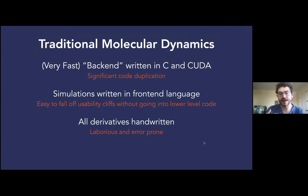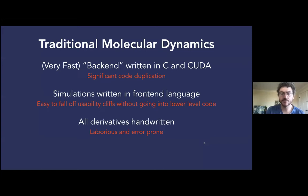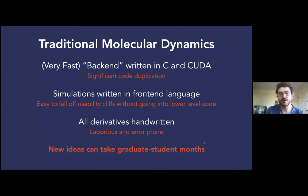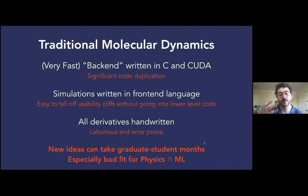One of the ways you get really fast code is by handing off large chunks of the simulation to the C library, so you're not going back and forth to Python — you say 'run my simulation for a thousand or ten thousand steps' and get back a state when done. Finally, all the derivatives are handwritten, which I think is laborious and error-prone. Together, this means that if I'm a graduate student wanting to try a new idea that's a little off the beaten path, it can take months. This is an especially bad fit for the intersection of machine learning and physics.